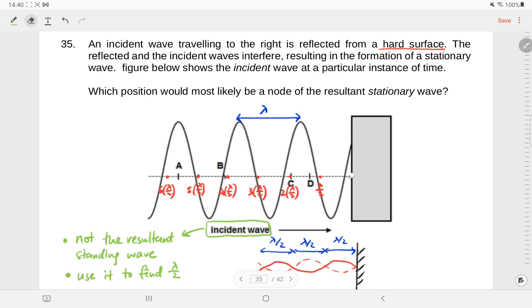So where will all the other nodes be found? They will all be found at multiples of lambda upon 2 away from the wall.